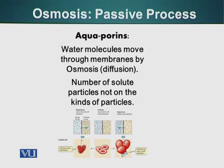If, on the other hand, we put the cell in a hypotonic solution — meaning the concentration of water is higher outside and the concentration of salt particles is low on the outside compared to the cell — the cell will absorb water and will keep on absorbing water until it bursts. Again, this is a process which does not require energy; it is gradient dependent, moving from a higher concentration to a lower concentration.